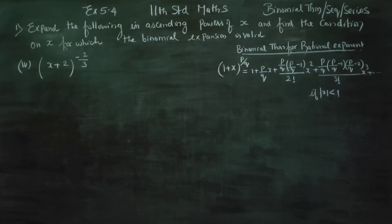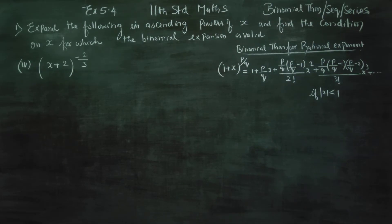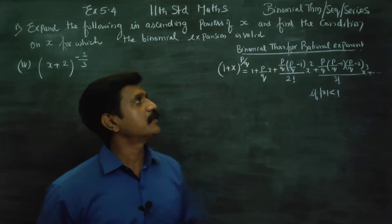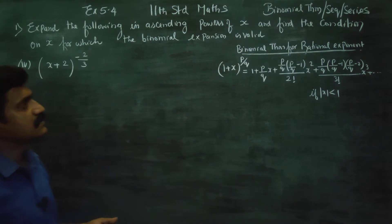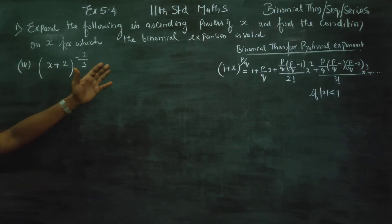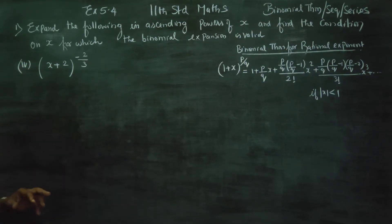Dear 11th standard students, I am Metro Karanagaran. In exercise number 5.4, sum number 4th subdivision, in sum number 1: expand the following in ascending powers of x and find the condition on x on which the binomial expansion is valid.